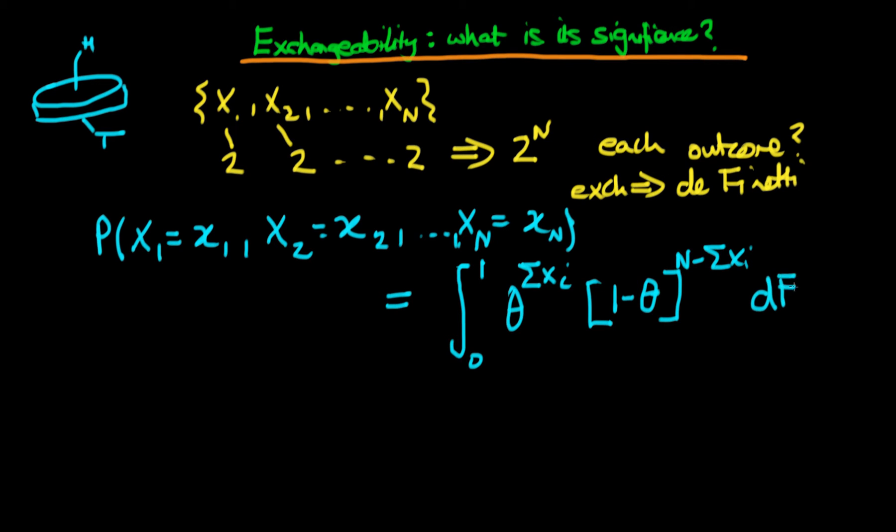This is integrated with respect to some cumulative probability distribution, df, which is itself a function of theta. So what does this seemingly ethereal thing actually mean?